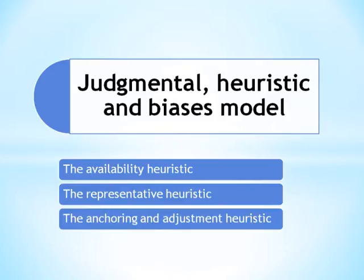The Availability Heuristic. According to the model, events which are emotional and vivid in nature are easily imagined and readily available or recalled from memory. The decision-maker is influenced by this readily available information. For instance, it is common for performance appraisals to be affected by recent or unusual behavior — either positive or negative — on the part of the appraisee, which is instantly recollected by the appraiser. This leads to a bias in decision-making.